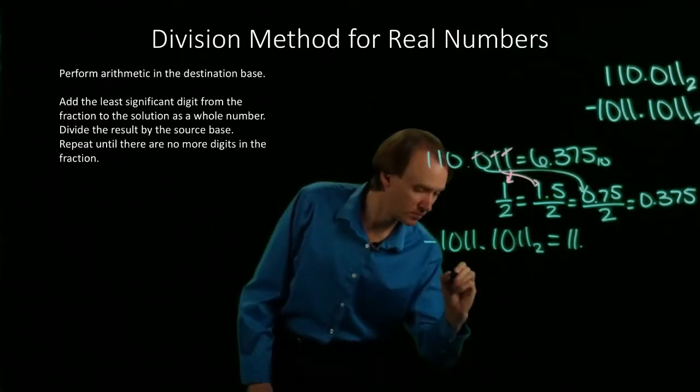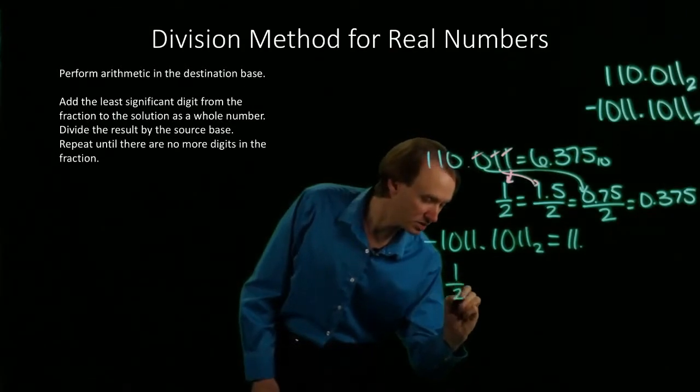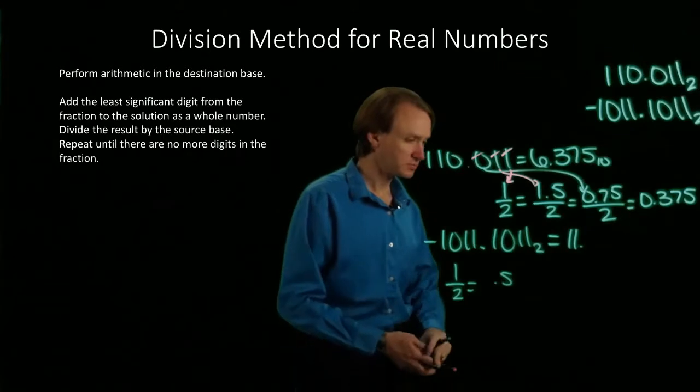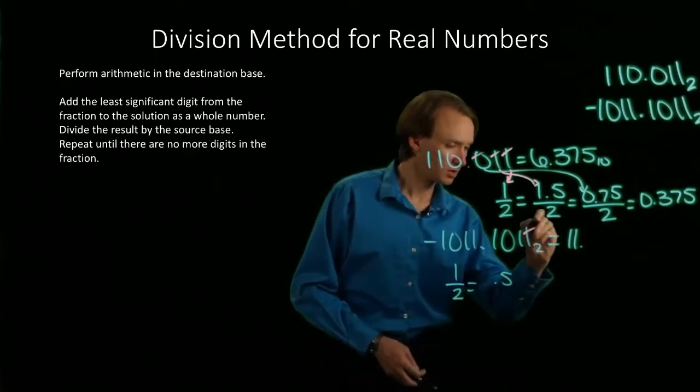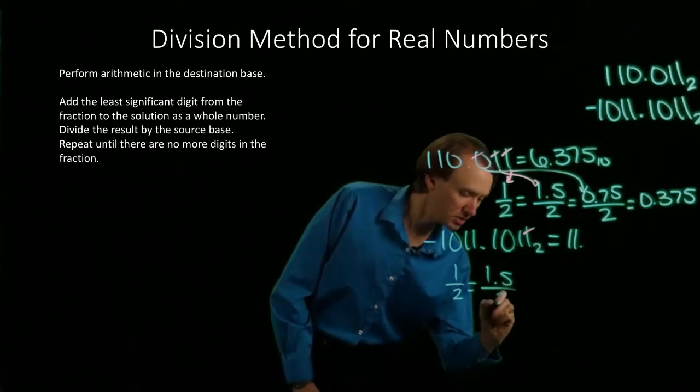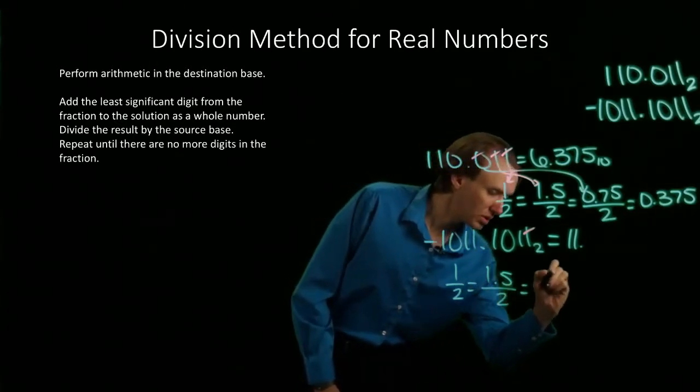I'll pull down this 1. Divide that by 2. I'll get 0.5. I'll pull down this next 1. Divide by 2. Get 0.75.